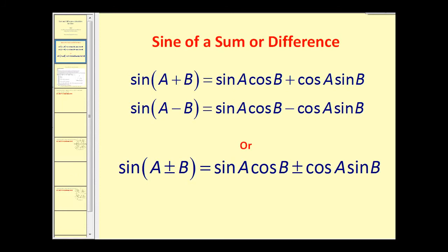The sine of a sum or difference are equal to the following. The sine of the quantity a plus b is equal to sine a times cosine b plus cosine a times sine b. And if we have a difference, the sine of the quantity a minus b is equal to sine a times cosine b minus cosine a times sine b. We can combine these two identities into a single identity using a plus-or-minus sign. If we have a sum of two angles we have a sum of these products; if we have a difference of two angles we have the difference of these two products.